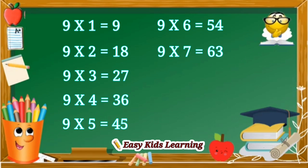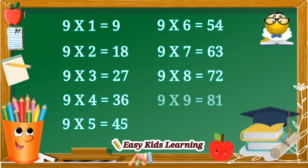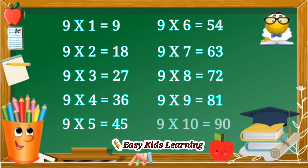9 sevens are 63. 9 eights are 72. 9 nines are 81. 9 tens are 90.